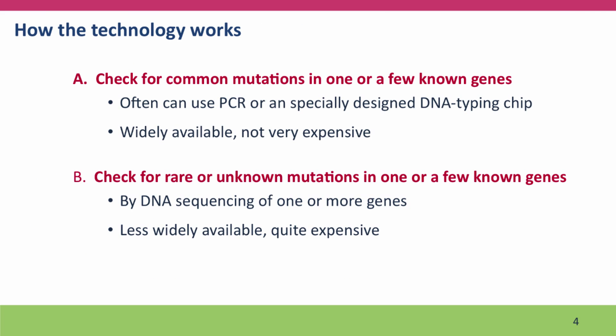There are two ways this technology is done. The simpler way, if the mutations are known, is to use PCR — the polymerase chain reaction, which amplifies DNA — or a specially designed DNA typing chip. These tests can be widely available and are not necessarily very expensive. If it's necessary to look for rare or unknown mutations in particular genes, then sequencing the alleles of those genes is required, and this technology is less widely available and quite expensive.